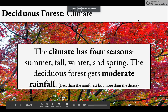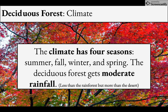We're going to be talking about the deciduous forest. We just got done talking about the rainforest, which has an abundance of rain and those levels of vegetation. The deciduous forest is quite different — the climate has four distinct seasons: summer, fall, winter, and spring, and it gets a moderate amount of rainfall. The rainforest gets a ton of rainfall, the desert doesn't get much — moderate means right in the middle.